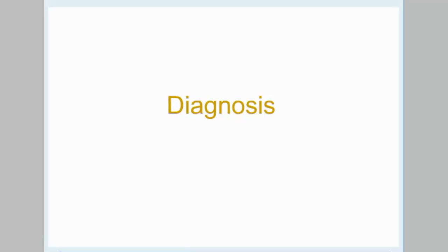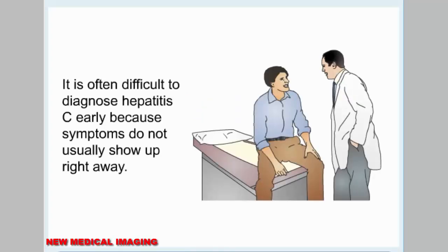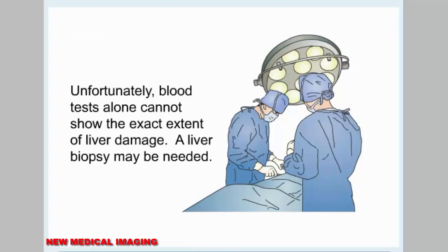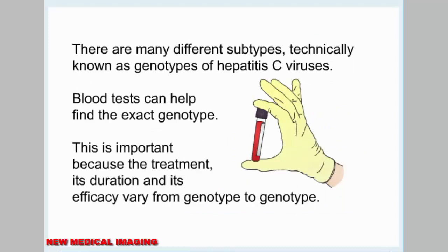Diagnosis. It is often difficult to diagnose hepatitis C early because symptoms do not usually show up right away. In order to find and treat hepatitis C early, it is important to be very honest with the doctor when discussing drug use and sexual practices. If the doctor feels the need, he or she may do blood tests to discover hepatitis C early enough to treat it. Unfortunately, blood tests alone cannot show the exact extent of liver damage — a liver biopsy may be needed. There are many different subtypes, technically known as genotypes, of hepatitis C viruses. Blood tests can help find the exact genotype, which is important because the treatment, its duration, and its efficacy vary from genotype to genotype.